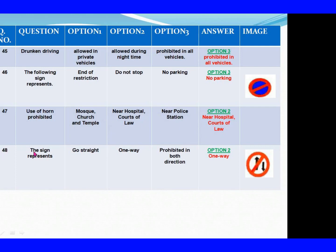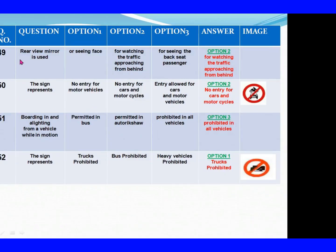Question 48: The sign represents. Option 1: Go straight. Option 2: One way. Option 3: Prohibited in both directions. The right answer is Option 2: One way. Question 49: Rear view mirror is used. Option 1: For seeing face. Option 2: For watching the traffic approaching from behind. Option 3: For seeing the backseat passenger. The right answer is Option 2: For watching the traffic approaching from behind.